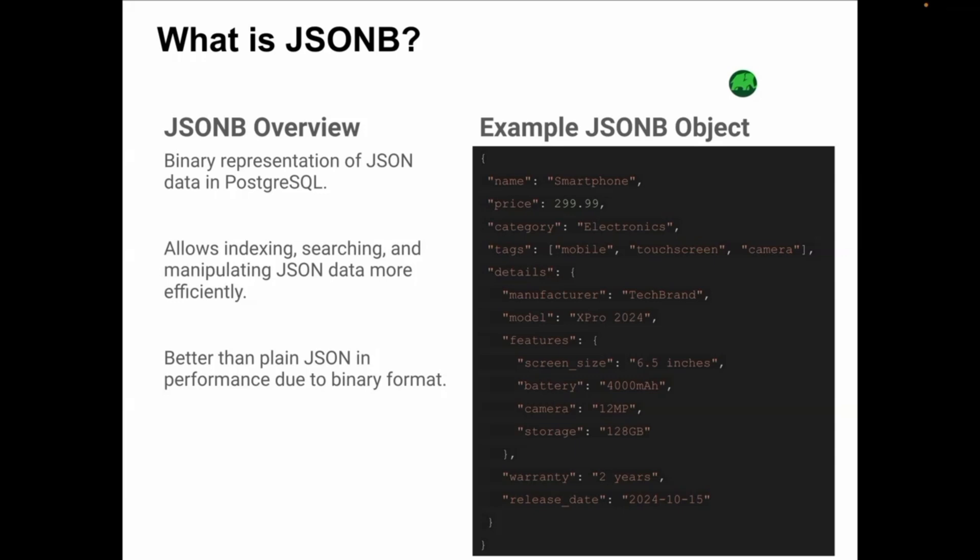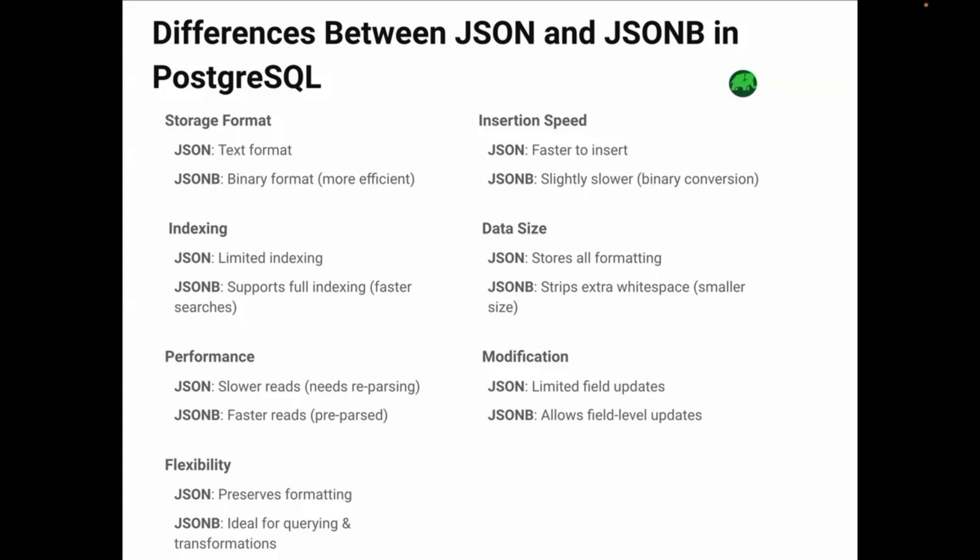Let's break down the key differences between JSON and JSONB so you can understand why JSONB is a better choice for most applications. First, JSON is stored as plain text while JSONB is stored in binary format, which allows for faster querying and better indexing. With JSONB, you get full indexing support — meaning faster searches, especially when querying specific keys or nested data. However, JSONB takes slightly longer to insert as it converts the JSON to binary upon insertion.